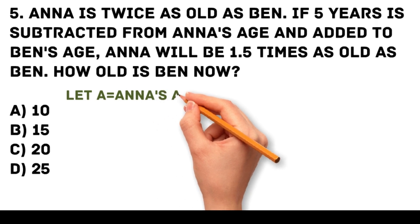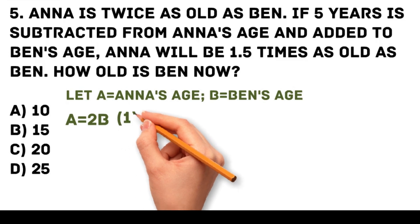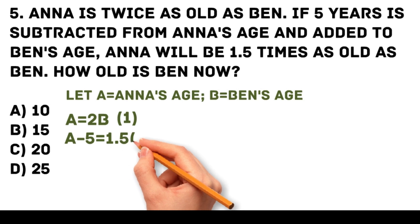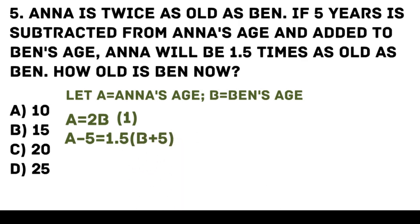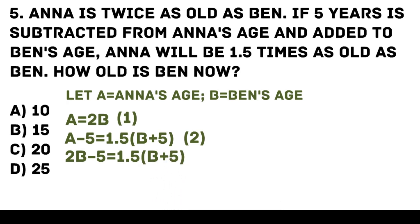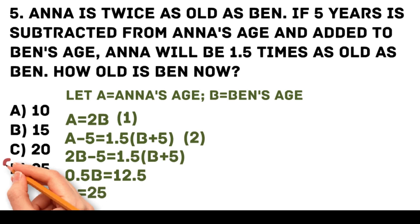Let a be Anna's age and b be Ben's age. From the given, Anna is twice as old as Ben, so a equals 2b — this is the first equation. Converting the second condition: (a minus 5) equals 1.5 times (b plus 5). Substituting a equals 2b: 2b minus 5 equals 1.5 times (b plus 5), so 0.5b equals 12.5. Therefore b equals 25. Ben's age is 25.